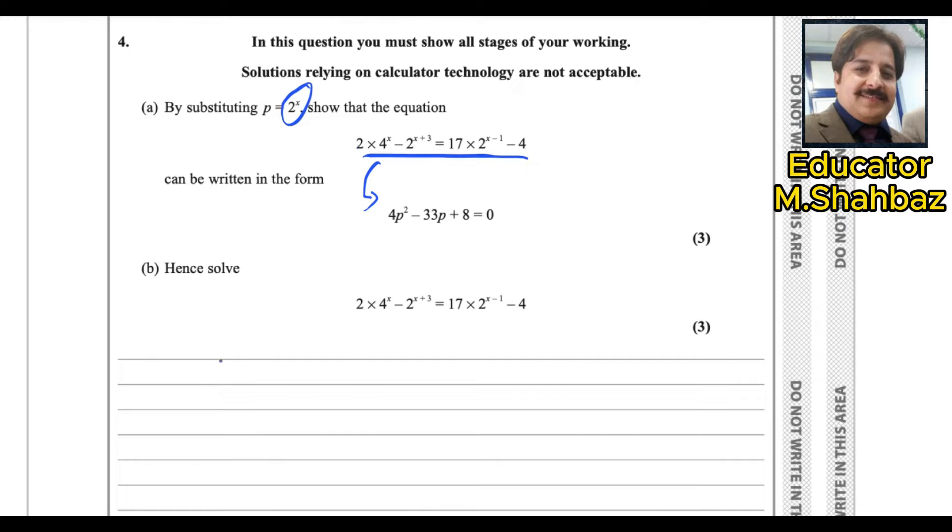You can write this way: 2 multiply 4 power x could be written as 2 power 2 is 4, if you remember, power x minus 2 power x and multiply 2 power 3. You can split the powers because if the bases are same, we can add the powers.